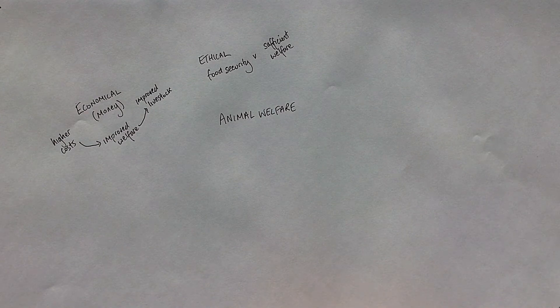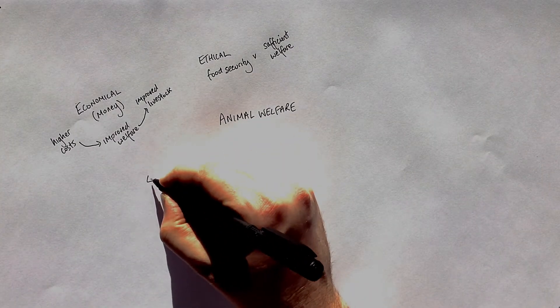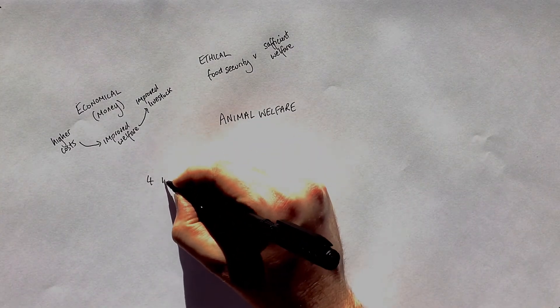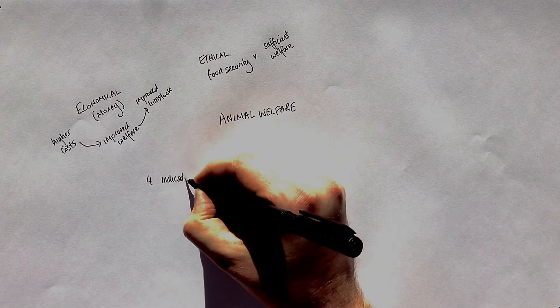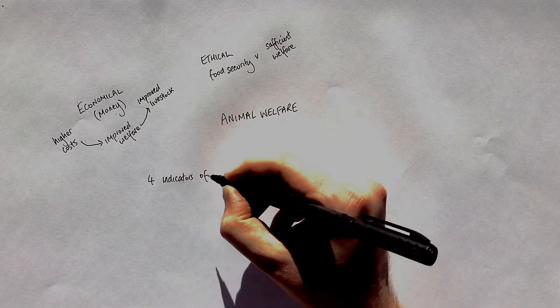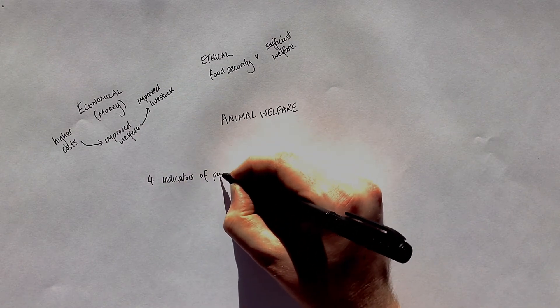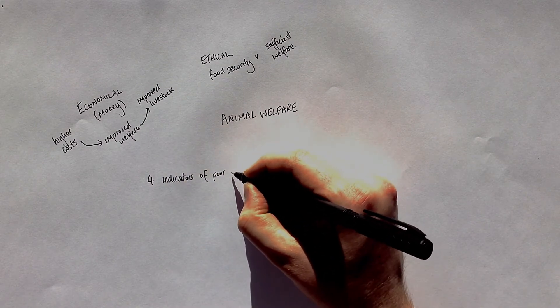When thinking about animal welfare, you need to know four indicators of bad welfare in animals. I like to use the abbreviation RAMS to remember these four indicators of poor welfare.